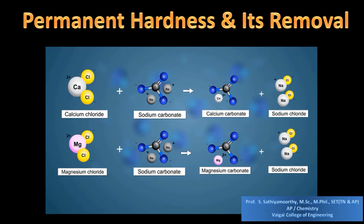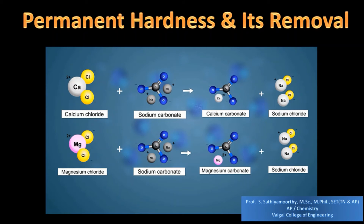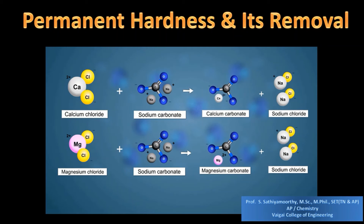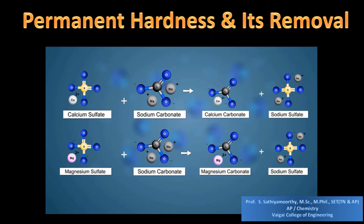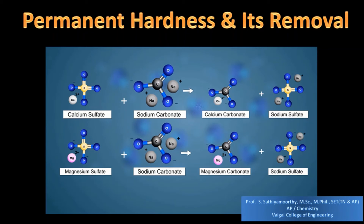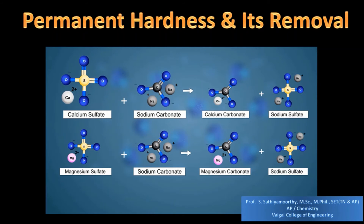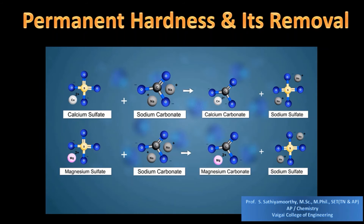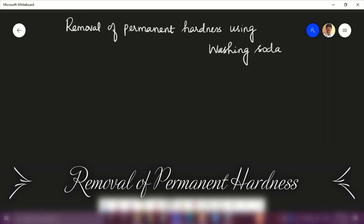Now we are going to see how washing soda removes permanent hardness from water. Washing soda is nothing but sodium carbonate, which reacts with the permanent hardness-producing salts and precipitates them as carbonates. These carbonates can easily be filtered and the water is made free from permanent hardness.